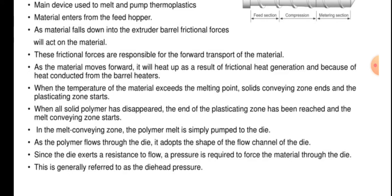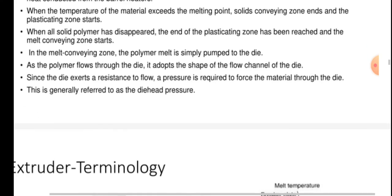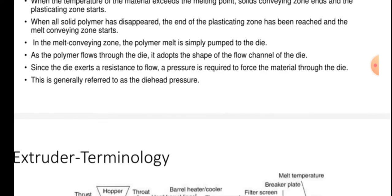When the temperature of the material exceeds the melting point, the solids conveying zone ends and the plasticating zone starts. When all solid polymer has disappeared, the plasticating zone ends and the melt conveying zone starts. In the melt conveying zone the polymer melt is simply pumped to the die. As the polymer flows through the die it adopts the shape of the flow channel. Since the die exerts a resistance to flow, pressure is required to force the material through the die.